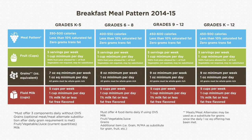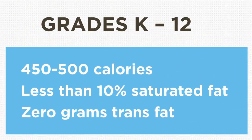In the school breakfast program, the meal pattern for grades K through 12 requires that the daily calories must be within the range of at least 450 as a minimum and 500 as the maximum amount when averaged over the week. Saturated fat must be less than 10% of the total calorie amount for the five-day week.